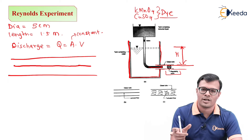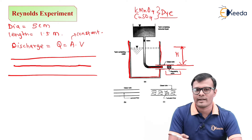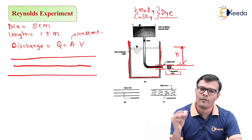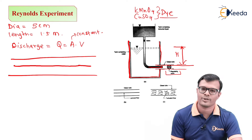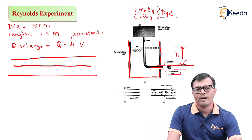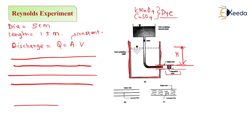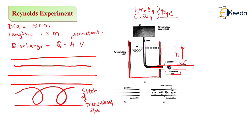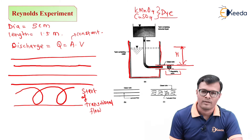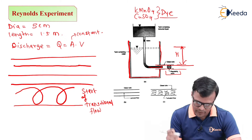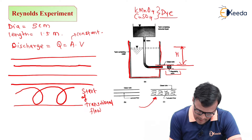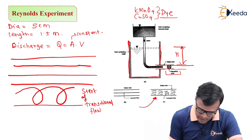If we increase discharge by opening the valve we increase the velocity, and we can check up to which velocity the laminar pattern remains clear. In Reynolds experiment, when a spiral movement is seen in the dye, this is the start of transitional flow. Finally, when transitional flow ends, the dye breaks up completely — that type of flow is called turbulent flow.